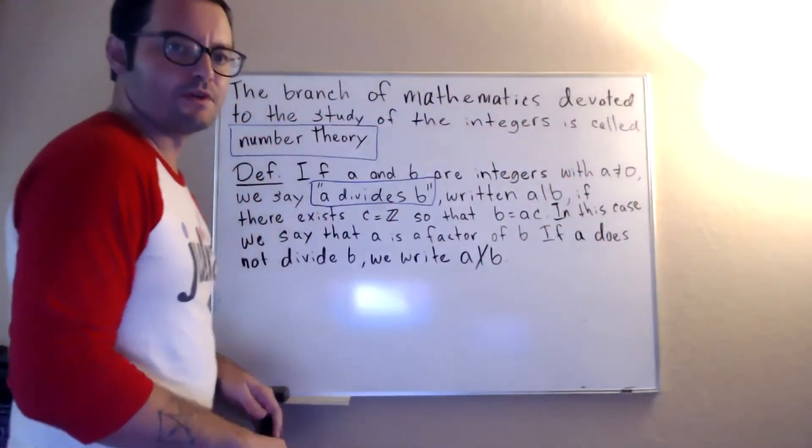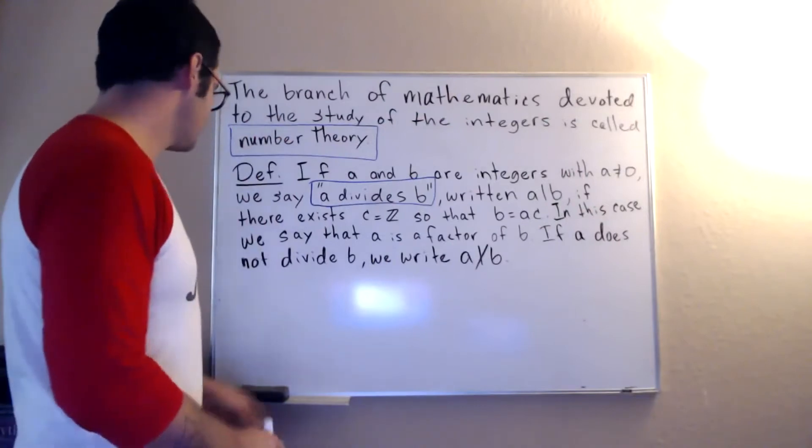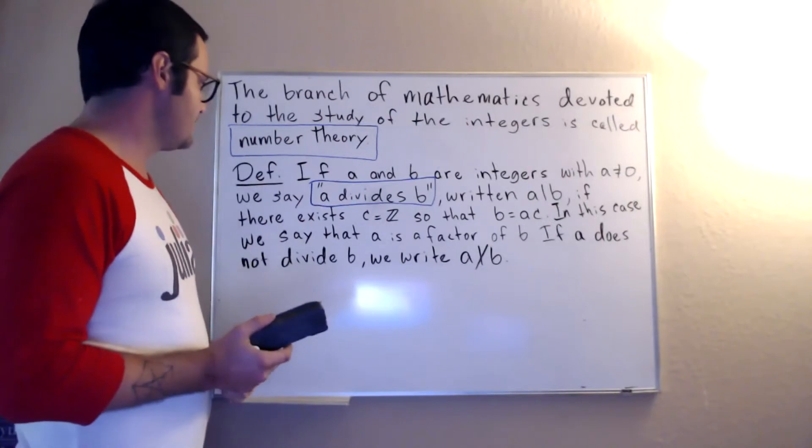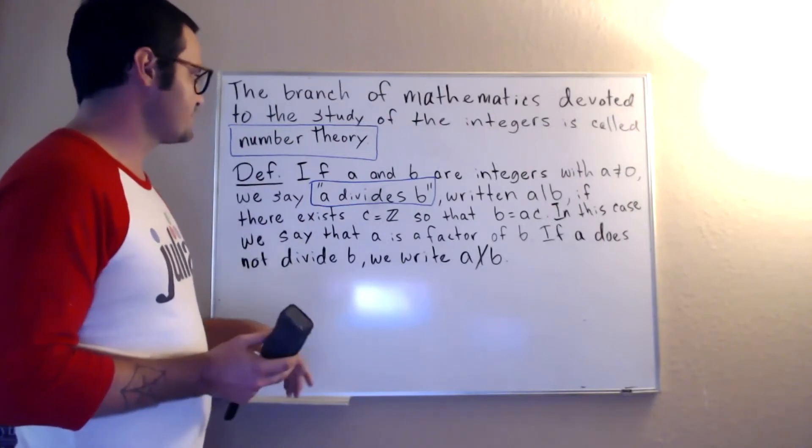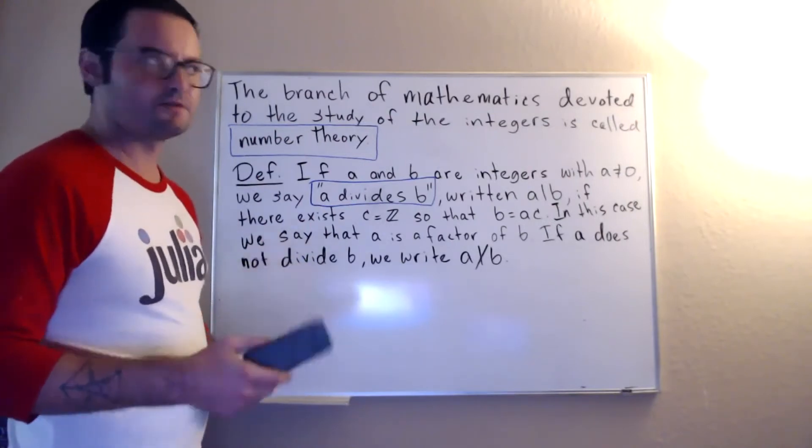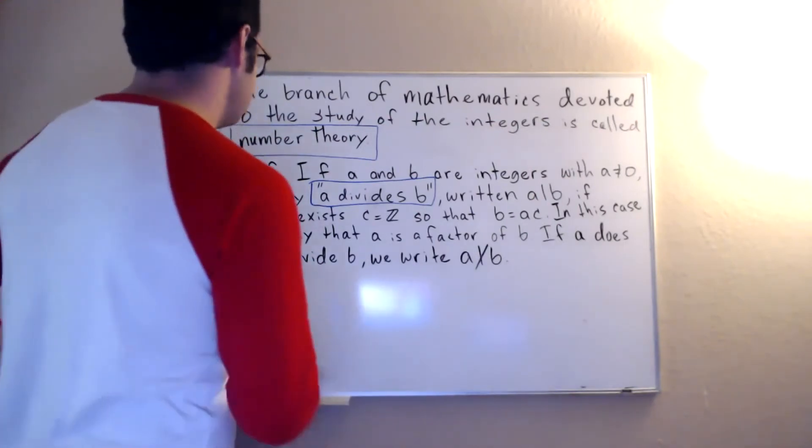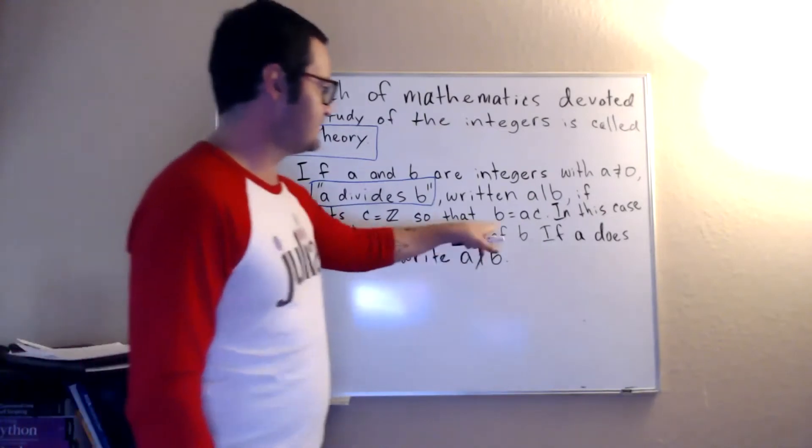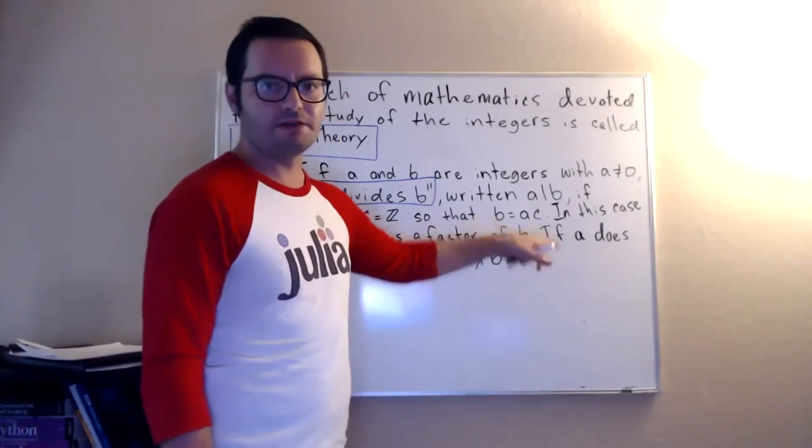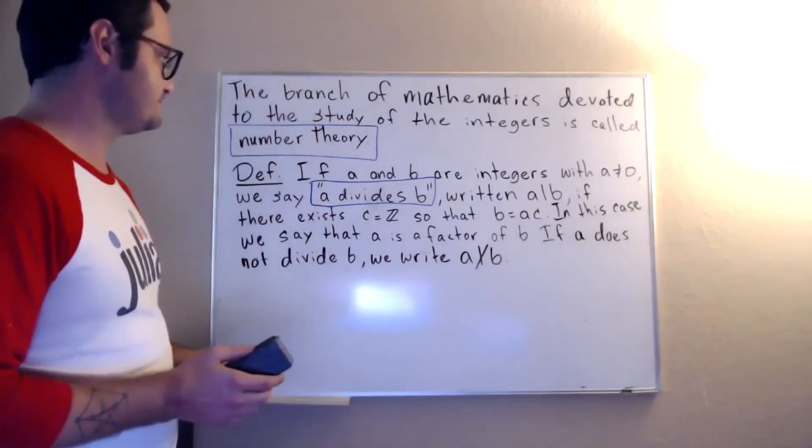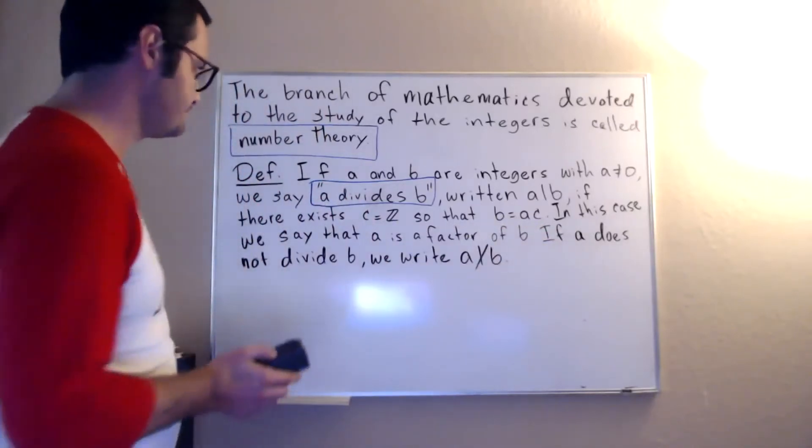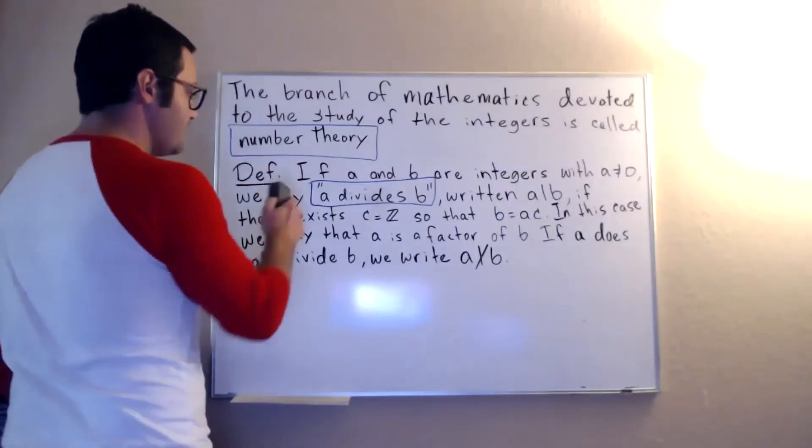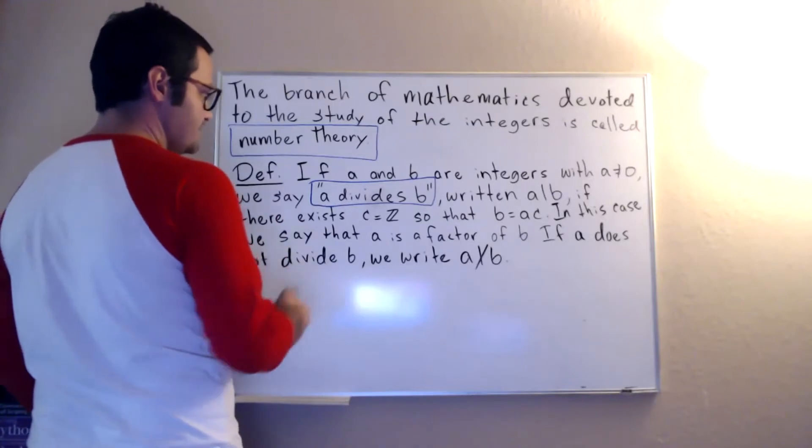Okay, make sure you have that down. All right, so this is the fundamental definition that we're going to work with today and throughout the section on number theory. We're going to encounter divisibility throughout most of this. Okay, so we say that a divides b if there exists some integer c such that b is equal to a times c. It's that simple.